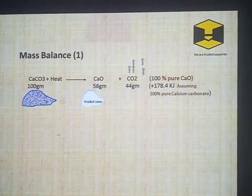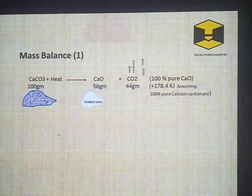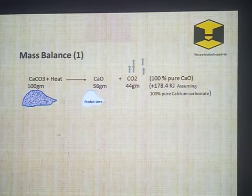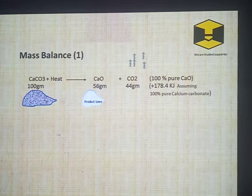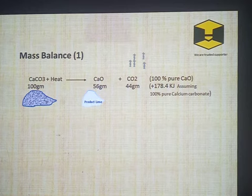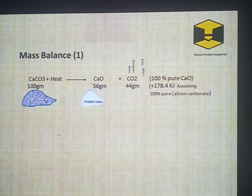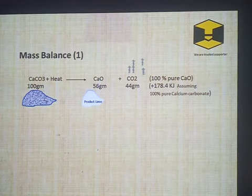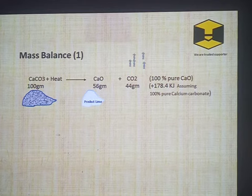In Reaction Case 1, suppose 100 grams of pure calcium carbonate is heated at 1250°C — it decomposes into 56 grams of calcium oxide and 44 grams of carbon dioxide. Purity will be 100 percent because the reaction is 100 percent complete and the reactant calcium carbonate is also 100 percent pure. Heat requirement will be 178.4 kilojoules.